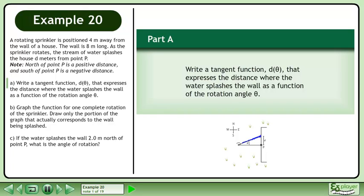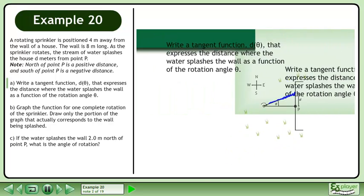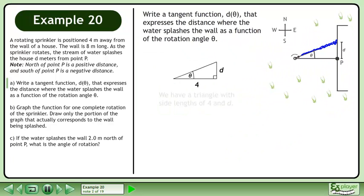In part A, write a tangent function d(θ) that expresses the distance where the water splashes the wall as a function of the rotation angle theta. We have a triangle with side lengths of 4 and d.